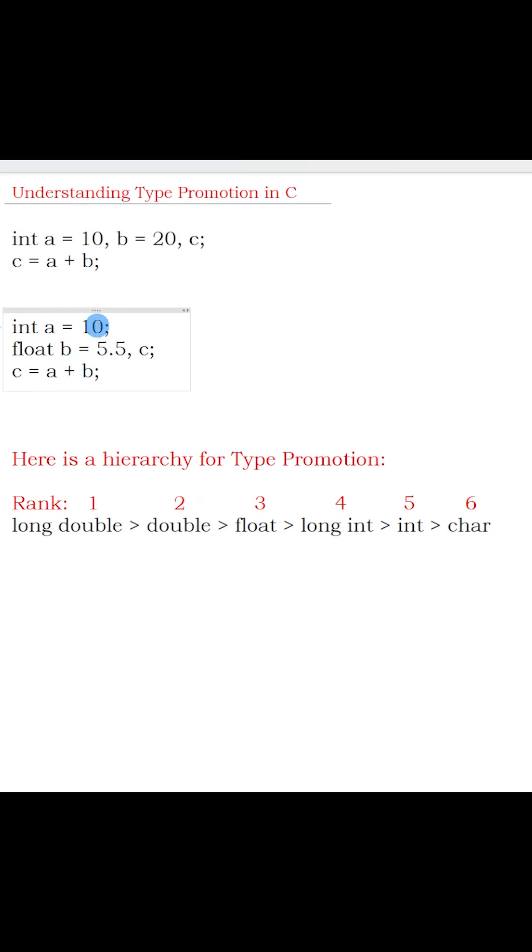Here, variable 'a' is of type integer and variable 'b' is of type float. Which one has the highest rank? Float has the highest rank - the rank for float is 3 and the rank for int is 5. Which one will get promoted?